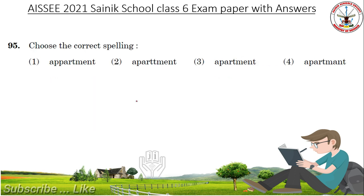Choose the correct spelling. Answer: Apartment — A-P-A-R-T-M-E-N-T.